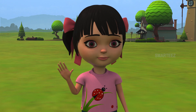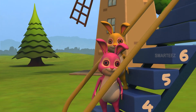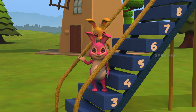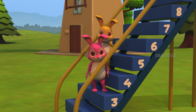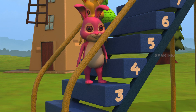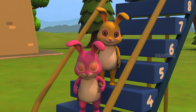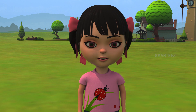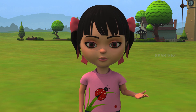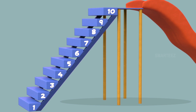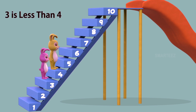Okay, the music stopped. Now let's see which step the bunnies are standing on. Pink bunny is on step number three and yellow bunny is on step number four. Three is below four. So, three is less than four. Yay! I'm the winner this time. The number the pink bunny is on is less than the yellow bunny. When the music stopped, the yellow bunny was on step number four and the pink bunny was on step number three. We see step number three is lower than step number four. We call this as three is less than four. So, when a number is lower to some other number, we call it as less than the other number.